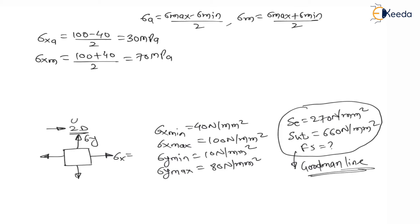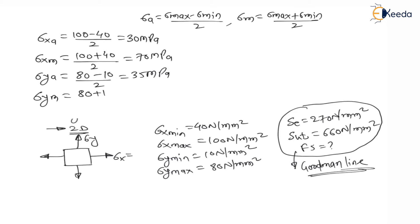The stress amplitude along the y-direction is σya = (80 − 10) / 2 = 35 MPa. The mean stress along the y-direction is σym = (80 + 10) / 2 = 45 MPa.